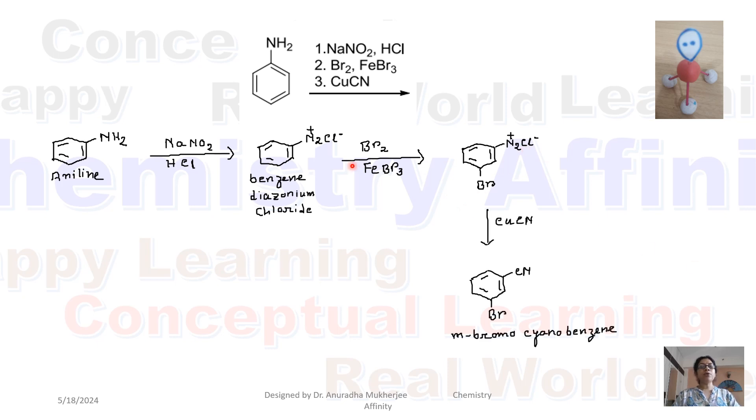Next step, when we are treating with copper cyanide, CN minus replaces N2 plus Cl minus and we are getting metabromocyanobenzene. So final product is metabromocyanobenzene from aniline.